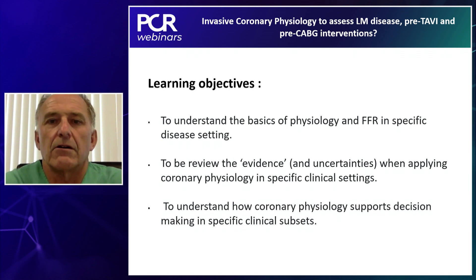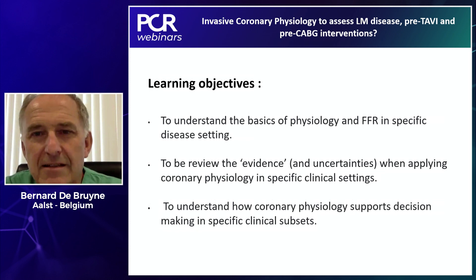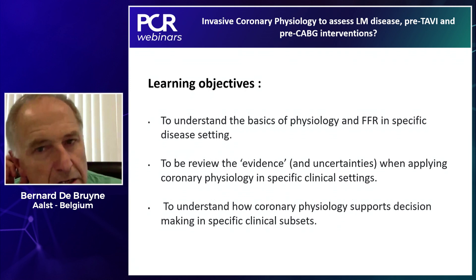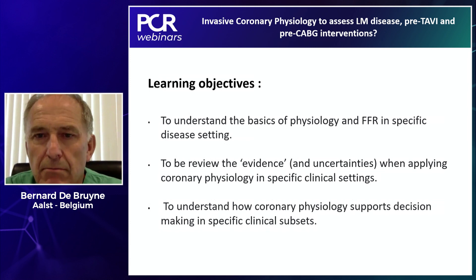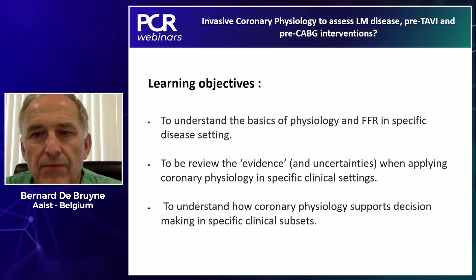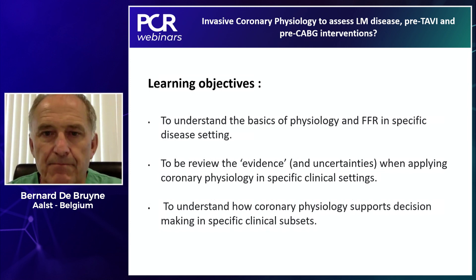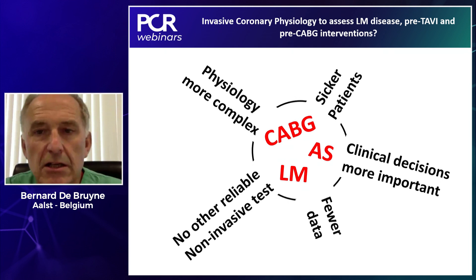The classical learning objectives are to understand the basics of physiology and fractional flow reserve in specific disease settings, but also to review the evidence — and I put that in quotation marks because there are actually more uncertainties than evidence when applying coronary physiology in these specific clinical settings. We will also try to understand how coronary physiology supports decision making in these specific clinical subsets: CABG, aortic stenosis, and left main patients.